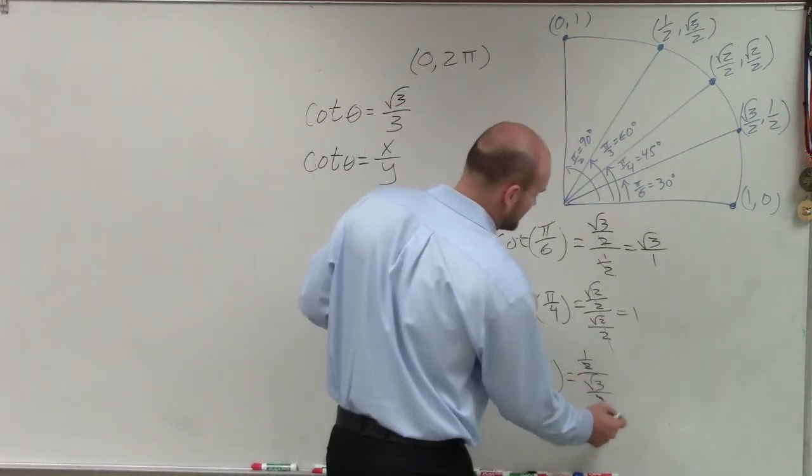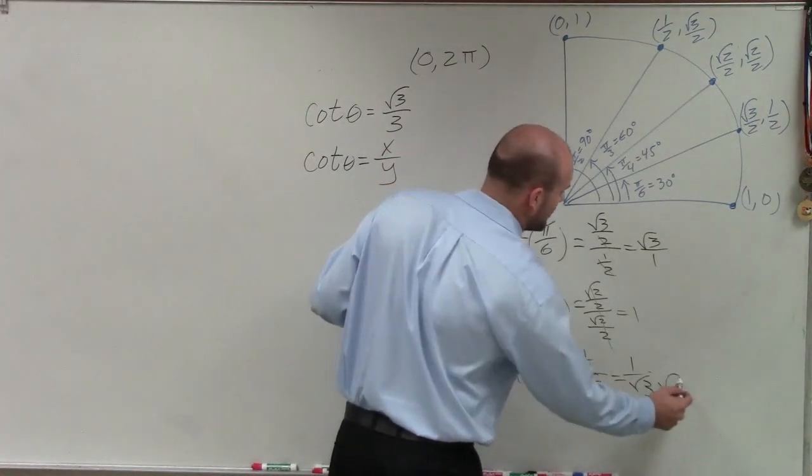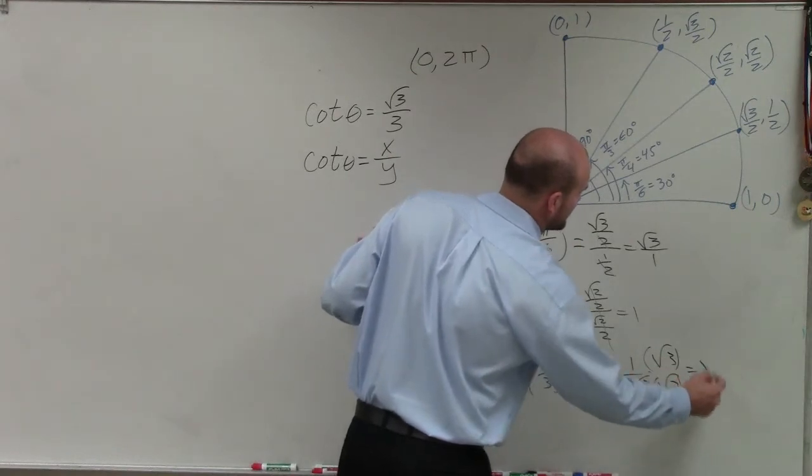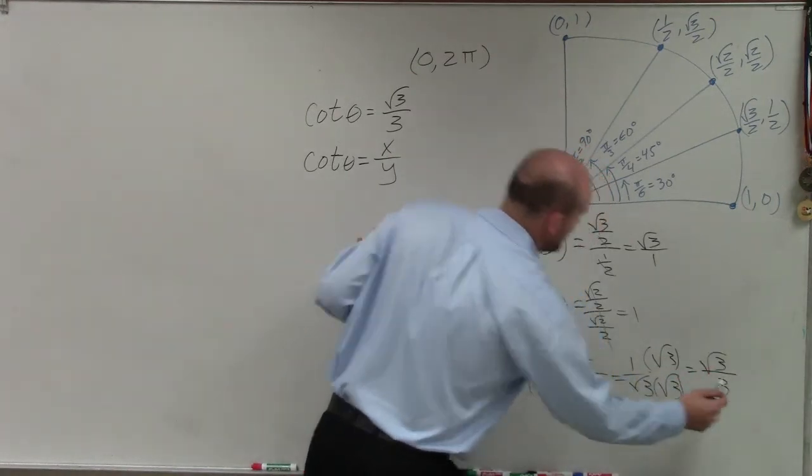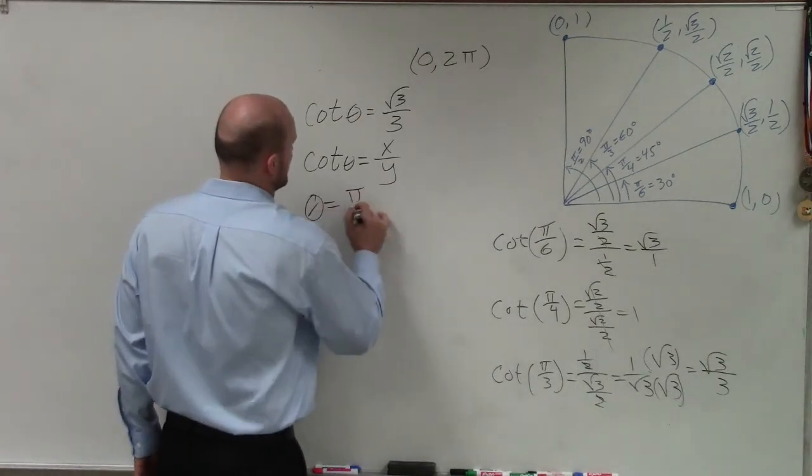However, let's just go and simplify this. Again, the 2's divide out. So I'm left with 1 over square root of 3. Rationalize the denominator. And therefore, I'm left with the square root of 3 over 3. So therefore, we know one of our angles is going to be pi over 3.